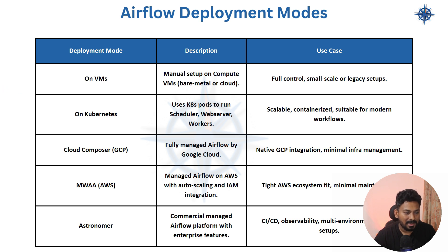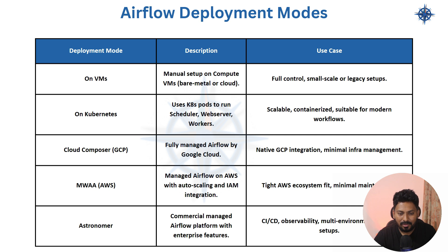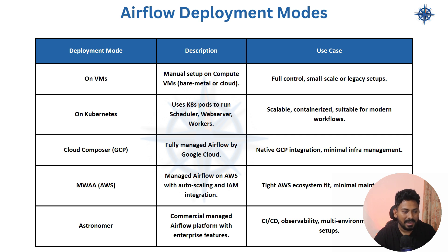Google Cloud Composer is a fully managed Airflow service running on Google Kubernetes Engine. DAGs are stored in a GCS bucket, making it easy to integrate with native GCP services. MWAA — Managed Workflows for Apache Airflow — is AWS's equivalent, fully managed, supporting Celery or Kubernetes executors with DAGs in S3. Worker and scheduler nodes run on Fargate containers, and the web server is managed by AWS.